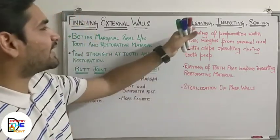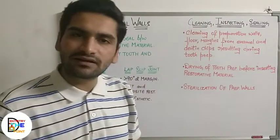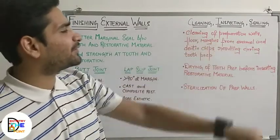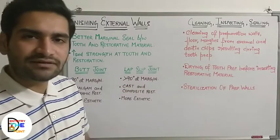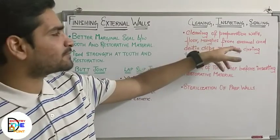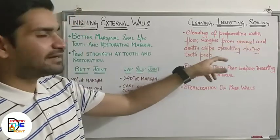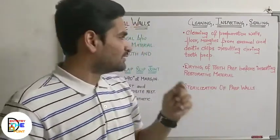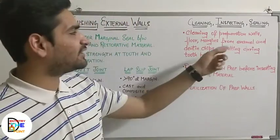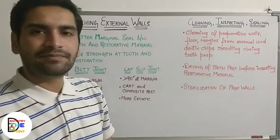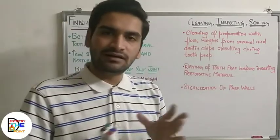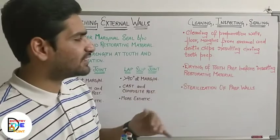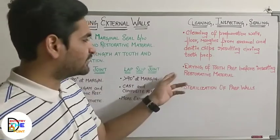Lastly, cleaning, inspecting and sealing of the cavity preparation. Once you are done, the last job is cleaning the preparation walls — the floor, margins, and also removing enamel and dentin chips present during tooth preparation. Whenever you grind or cut the tooth, small minute chips are scattered throughout the cavity, so it is necessary to remove this debris and clean the cavity thoroughly.